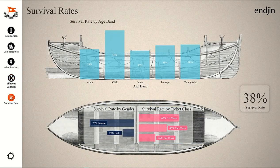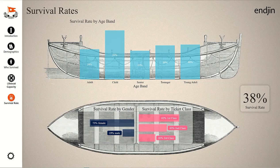The survival rate screen shows the proportion of whether they were adults, children, seniors, teenagers, or young adults who were saved by the lifeboats. The plan view shows what proportion were male or female and what travel class they were from, with a stark reminder that there was only a 38% survival rate from the disaster.